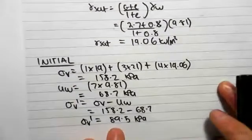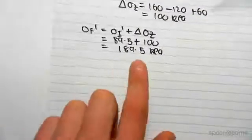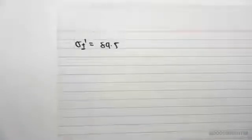We know that the initial effective stress is 89.5 kPa, so the initial effective stress is 89.5 kPa. And we found that the final effective stress is 189.5 kPa, so we can write that down.